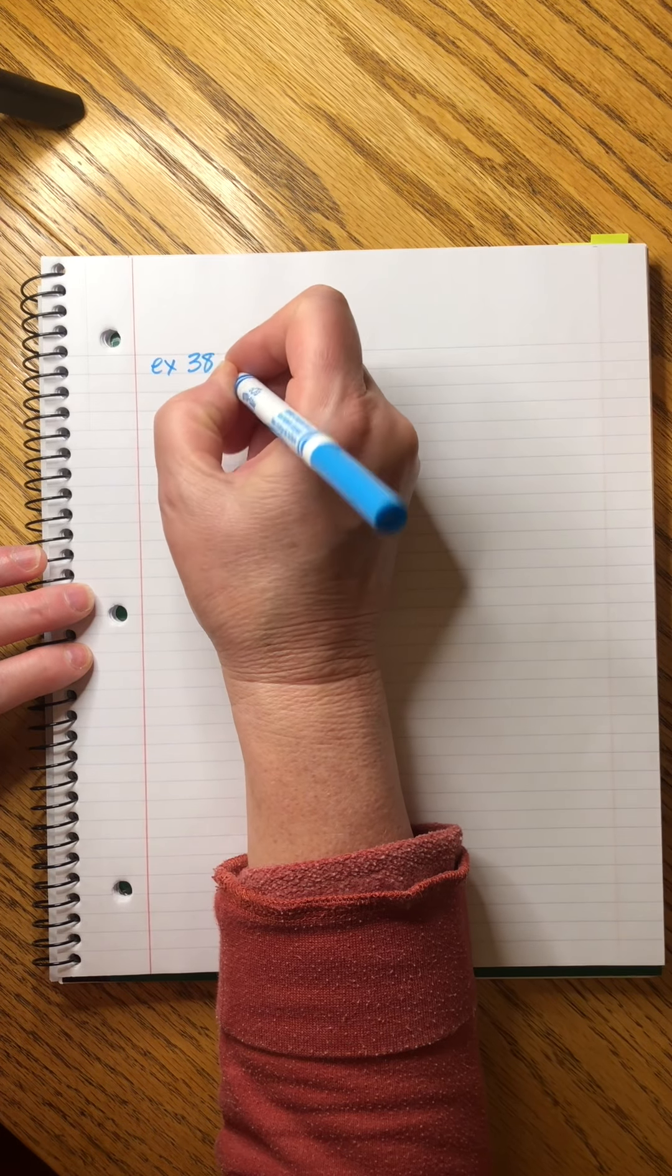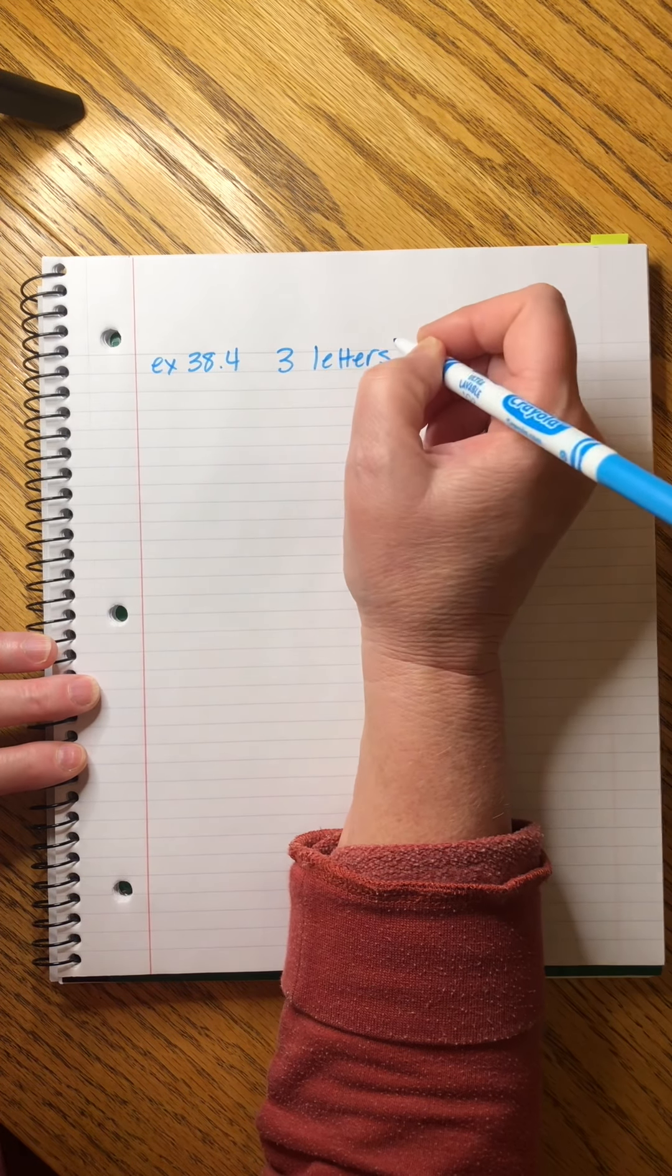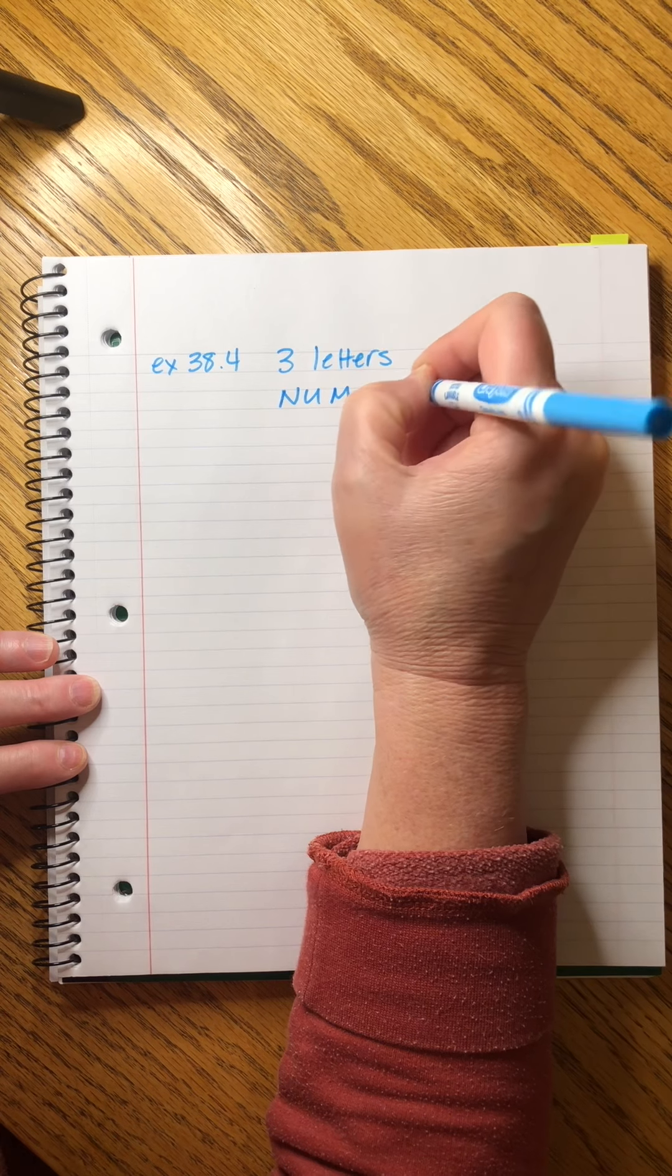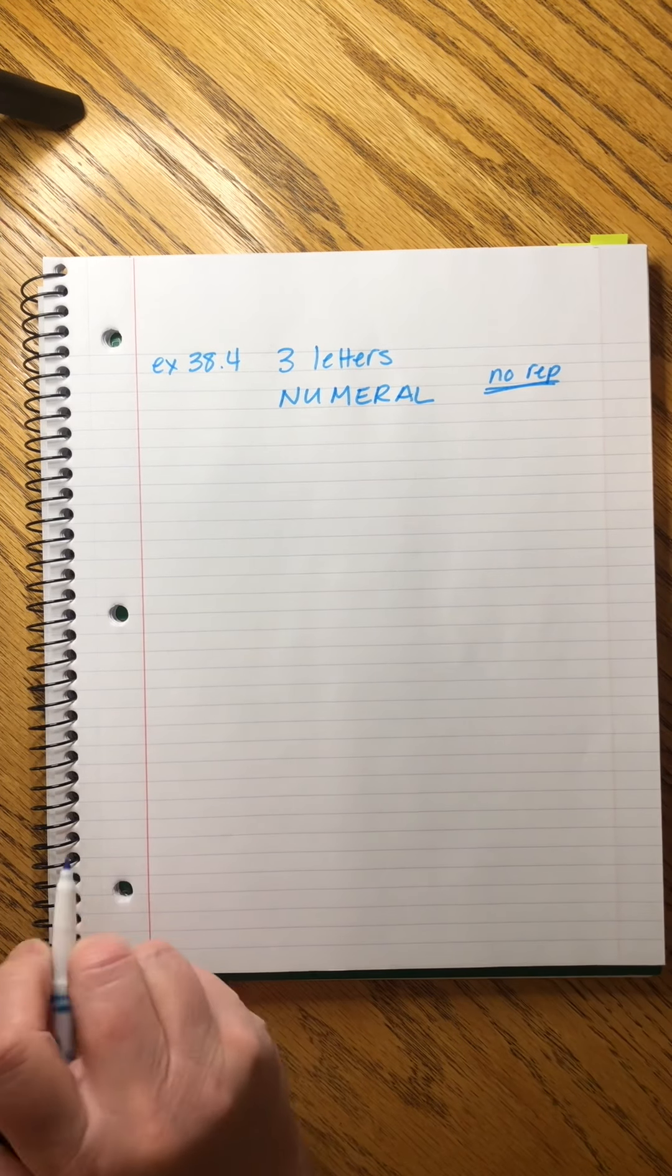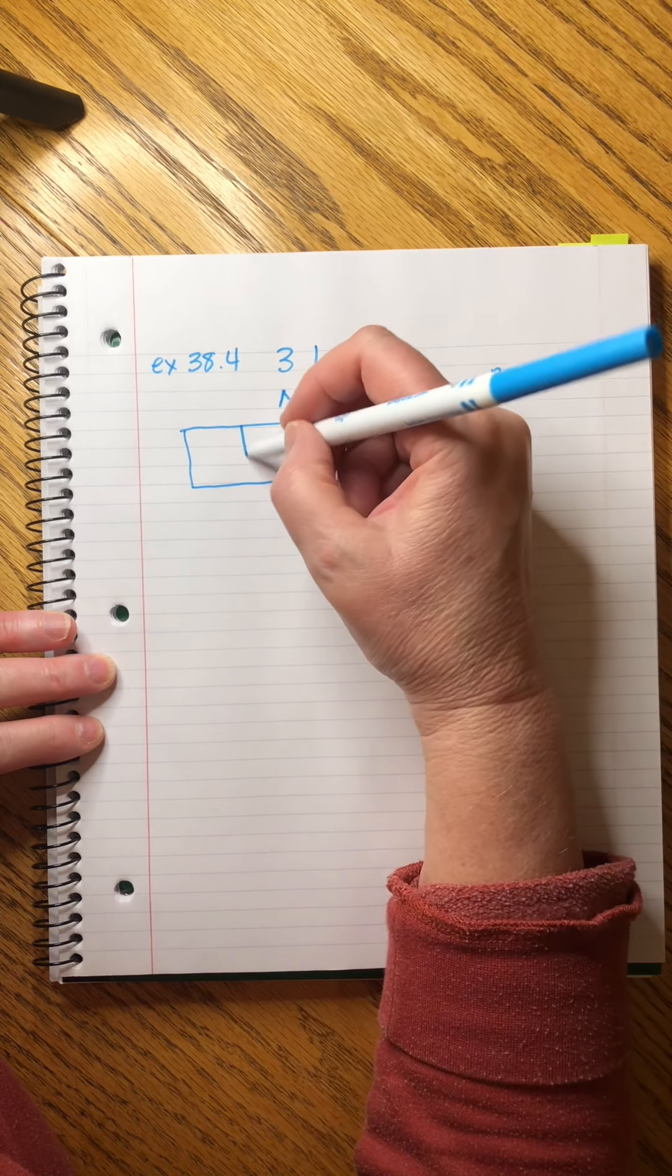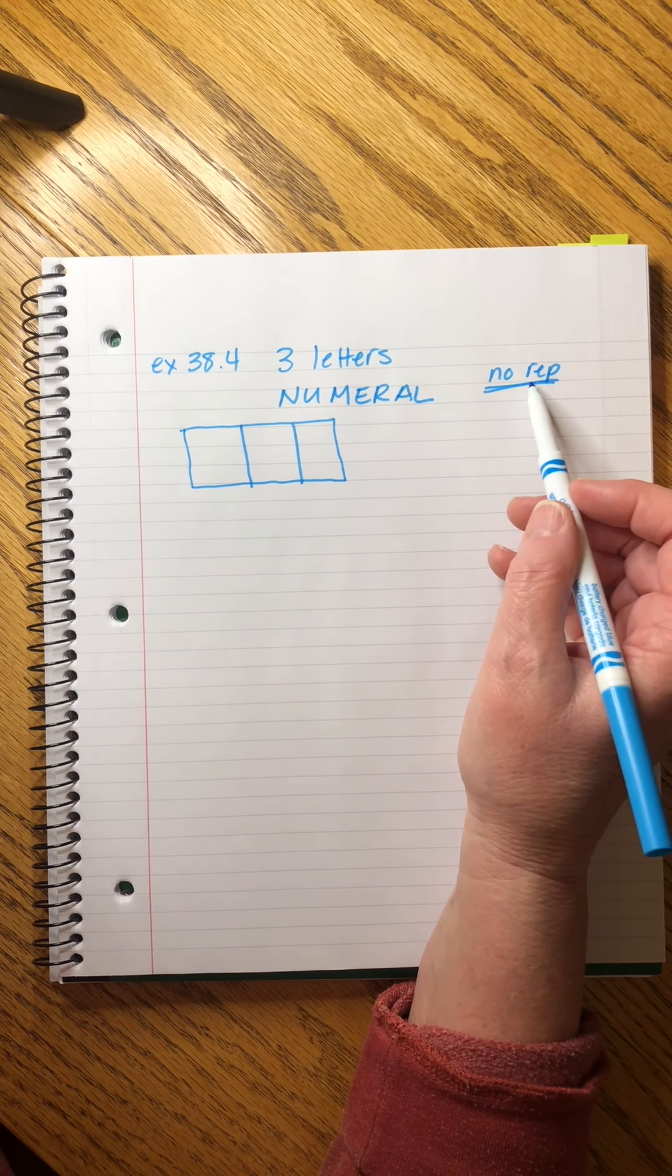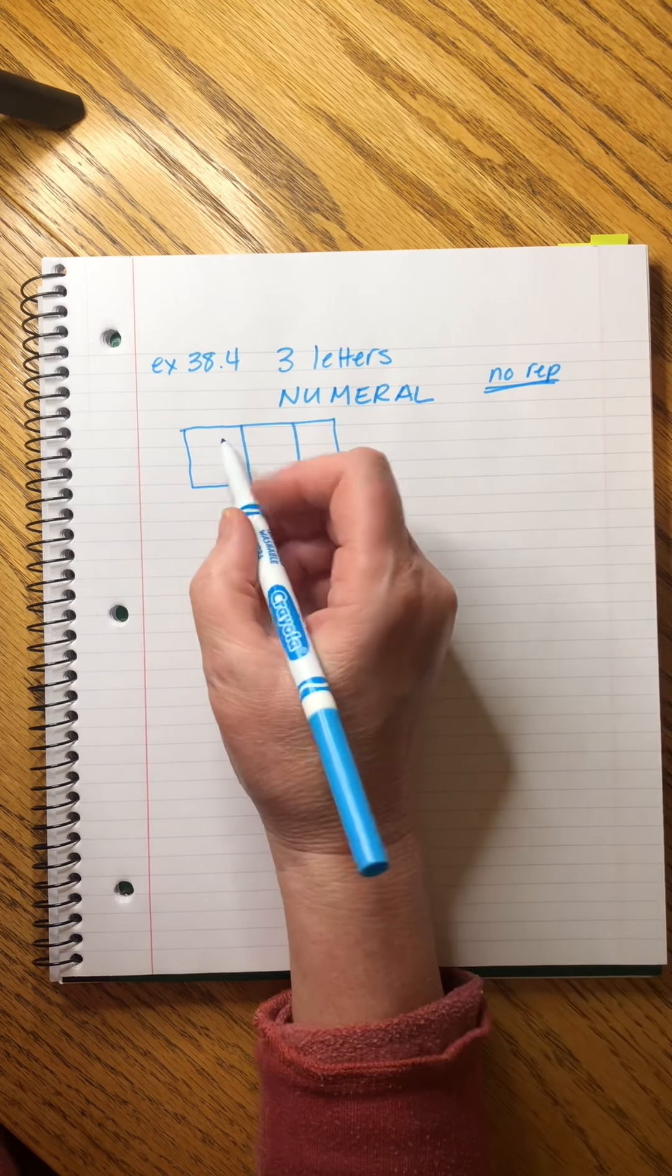Okay. Another one. Notice how each one's just a little bit different, a little bit subtle, a little bit, it requires fresh thinking. 38.4. How many three-letter signs can be made from the word numeral if no repetition? I always write no rep or rep okay. All right. So it's just three letters. But again, we don't have a whole stack of ends. We just have the one. So once we use it, we can't use it again. No repetition. All right. So in the first box, how many choices do we have? Well, we could put in any one of these letters. One, two, three, four, five, six, seven. We have seven choices.